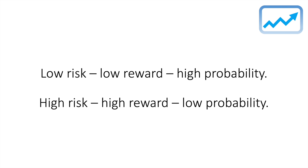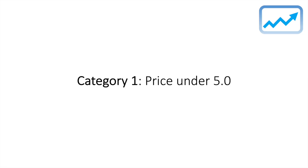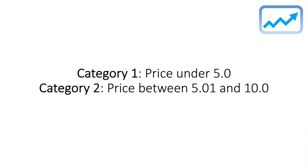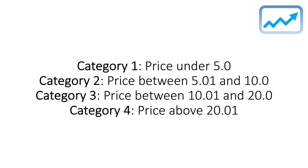Here is the criteria I use to classify players for this trading strategy. Category one players are priced under 5.0. Category two are players priced between 5.01 and 10.0. Category three are players priced between 10.01 and 20.0. And category four — very high risk — are players priced above 20.01.